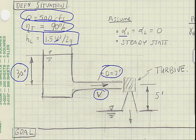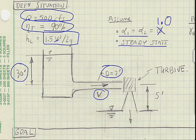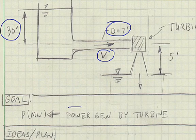We assume that the kinetic energy correction factors are 1.0 and we assume steady state flow. The goal is the power produced by the turbine.